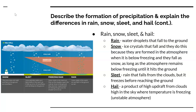Sleet is rain that falls from the clouds but freezes before reaching the ground. Hail is a product of high updraft from clouds high up in the sky where the temperature is freezing — it's a little bit unstable up there.